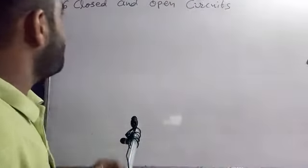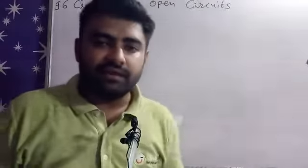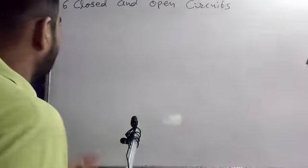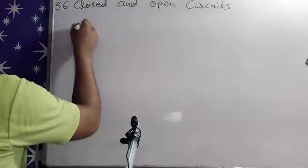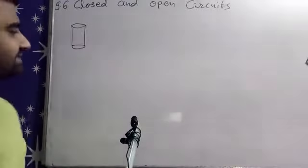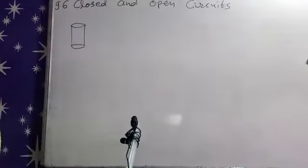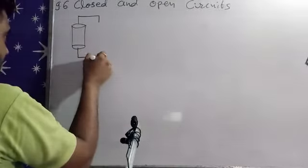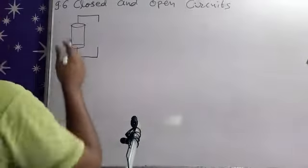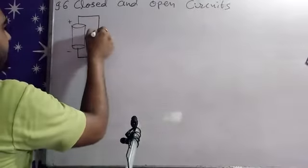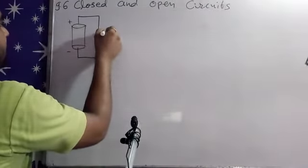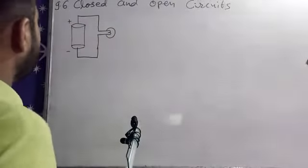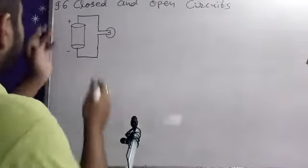Hello friends, today's topic is closed and open circuits. We are forming different types of circuits. Starting from one cell — a pencil cell, also called a dry cell. We use metal wire from one terminal and another metal wire from the other terminal. If this is positive and this is negative, with this cell we join one electric bulb.